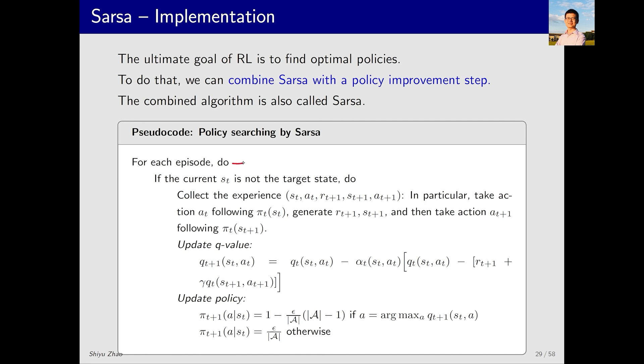Here is the pseudocode of this algorithm. Let's go through it briefly. For each episode, what do we do? If the current state is not the target state, we proceed with the following steps. At time T, we get an experience. In state S_T, we take action A_T according to the current policy. Receive reward R_{t+1} and transition to the next state S_{t+1}. In the next state, we sample an action A_{t+1} based on the policy at that state. This gives us the experience needed for SARSA.